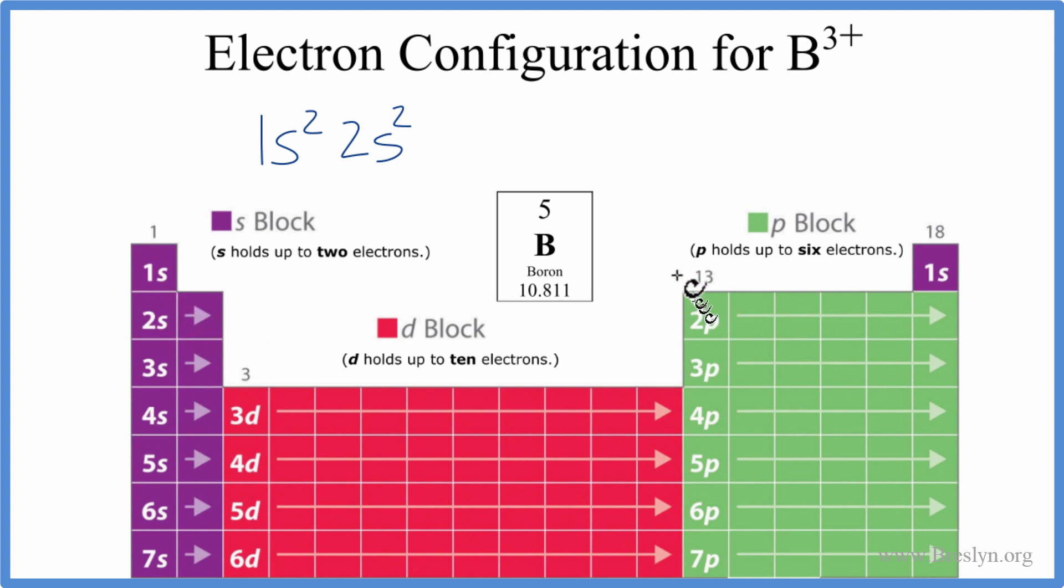And then we go over to the p, the 2p, which can hold up to six electrons, and we only need one. So, we're just going to put one in here. And this is the electron configuration for just boron, neutral boron.